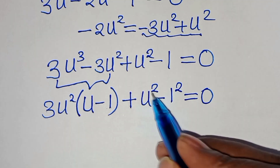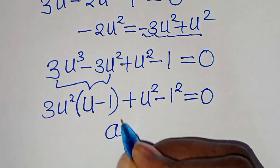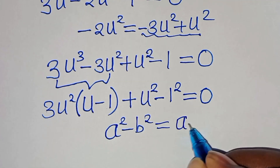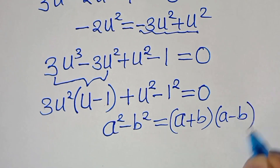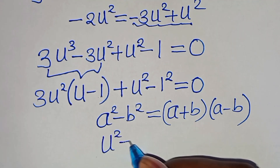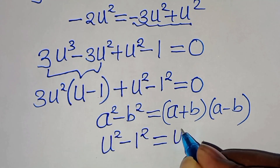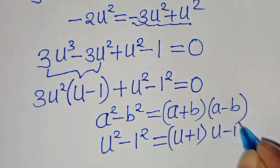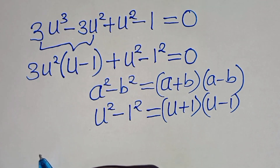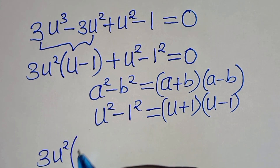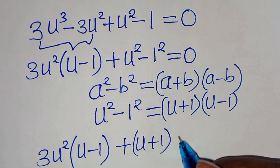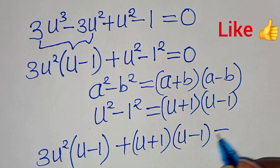So, we have u to the power of 2 minus 1 to the power of 2, this is in the form of a squared minus b squared — this is the difference of two squares, that we can express as (a + b)(a − b). Now, applying this identity, u to the power of 2 minus 1 to the power of 2 is the same thing as (u + 1)(u − 1). So, let's substitute this back to the equation: we have 3u to the power of 2 times (u minus 1), then plus (u plus 1)(u minus 1), this is equal to 0.